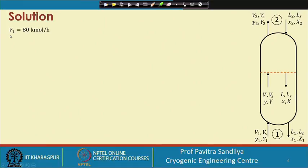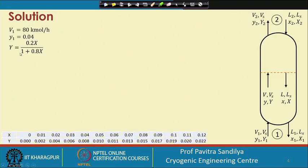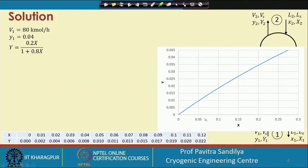We are given the vapor phase flow rate V1 as 80 kilo mole per hour. V1 will be different from V2 because cyclohexane has been taken out from the vapor phase. The mole fraction is given, and the equilibrium relationship is in terms of mole ratio. If we use this relationship and put various values of x from 0 to about 0.12, we get corresponding values of y, and we plot x and y in terms of mole ratio to obtain the equilibrium curve.